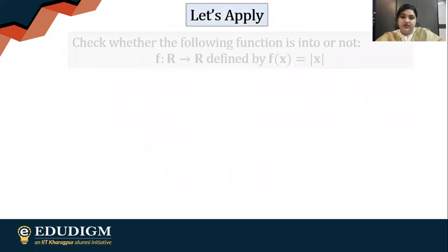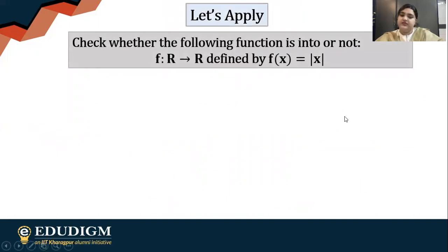Let's see one more example in the form f(x) = |x|. Now what do we want? We want at least one element which is not having any pre-image.